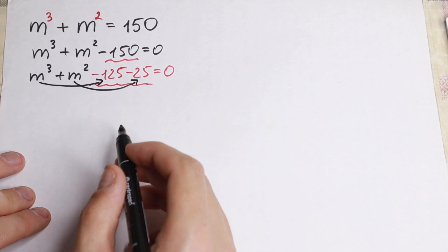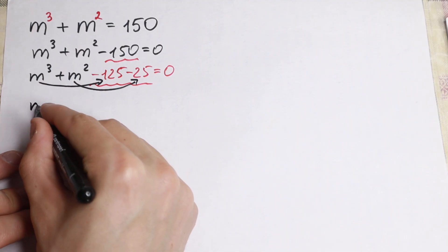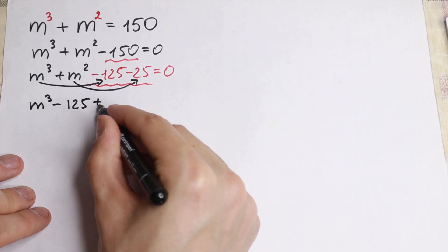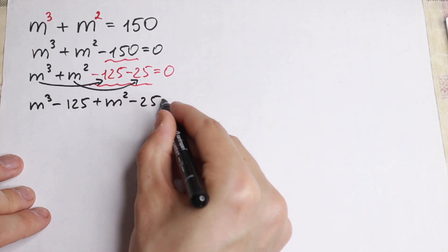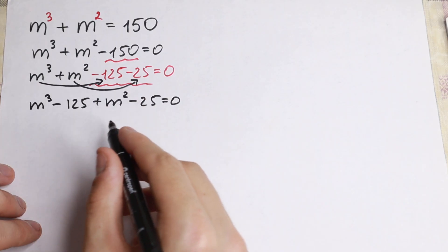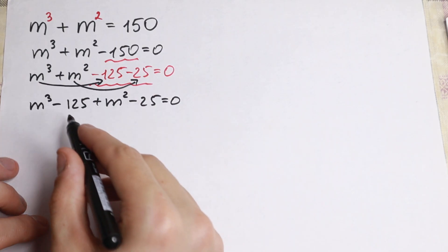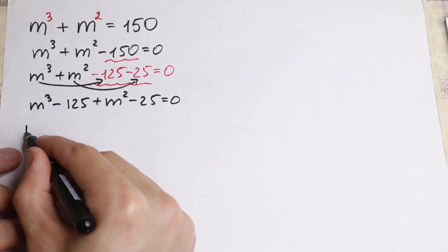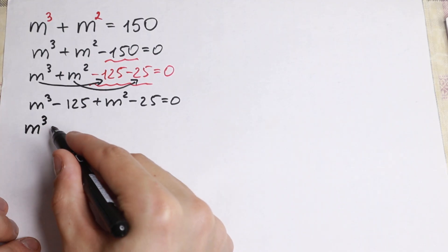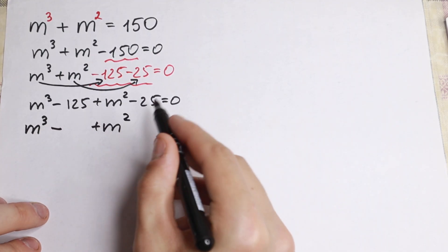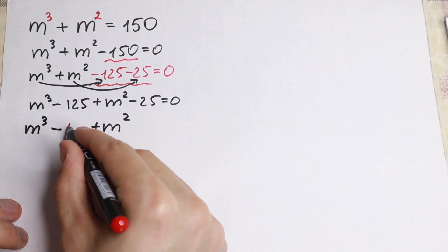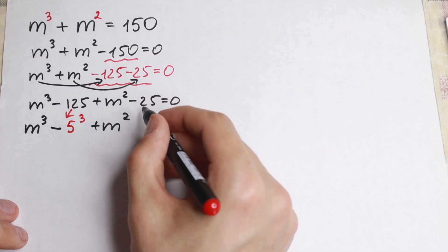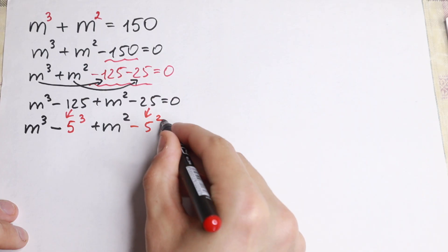I just wanted to group these elements. We have m³ minus 125, and on the right side plus m² minus 25. I hope you can see why I group these elements — because 125 is 5 cubed and 25 is 5 squared. So we can write it as m³ minus 5³ and m² minus 5².